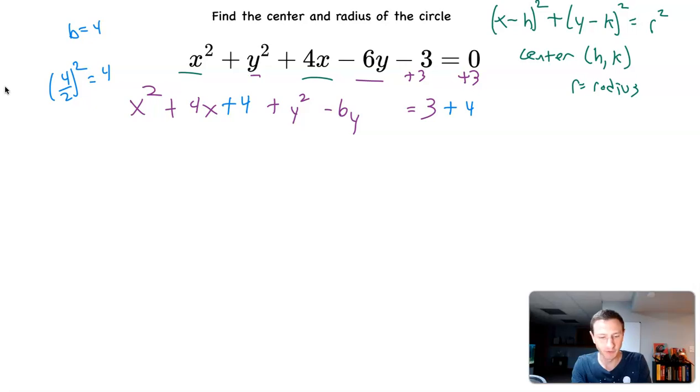And then we have to do it to the y's now. So we're going to take negative 6 divided by 2 squared. Negative 6 divided by 2 is negative 3 squared. Negative 3 squared is positive 9. So I'm going to add 9 to both sides now.